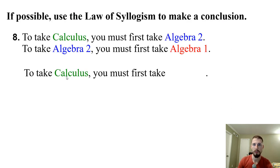If possible, use the law of syllogism. So it's like the transitive property going from A to B, then B to C, so we can skip from A directly to C. Here's a great example. To take calc, you must first take algebra two. To take algebra two, you must first take algebra one, which means before you take calculus, you must first take algebra one. So again, just the law of syllogism, which same thing as transitive property, just using logic.